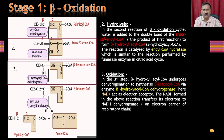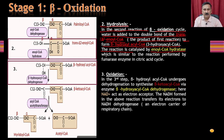Step two is hydration. Water is added to the double bond of trans-enoyl-CoA — the product of step one — to form beta-hydroxyacyl-CoA (or 3-hydroxyacyl-CoA). This reaction is catalyzed by enoyl-CoA hydratase, which is analogous to the fumarase reaction in the citric acid cycle.